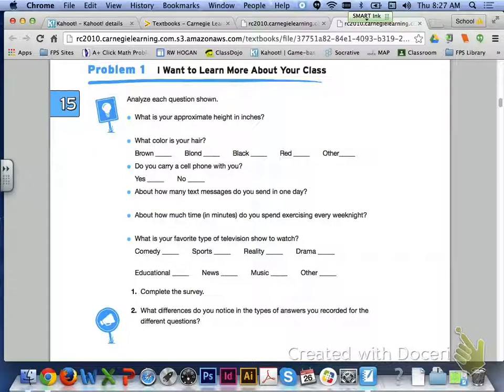To start off in problem number one, we want to first take a look at each question that is listed and complete the survey. After we are done doing that, we want to look at the differences then that you notice in the types of answers that you recorded for the different questions. So go ahead and do number one and number two based off of the questions shown.